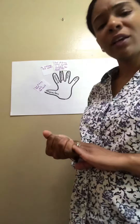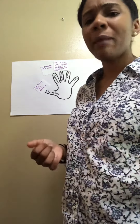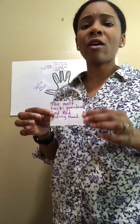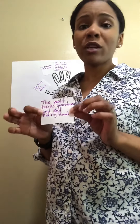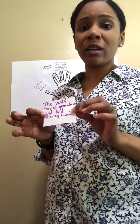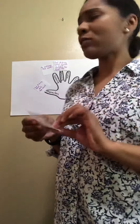Now the middle of the story. Let's think about what happened in the middle. I hope you're thinking about how the wolf tricked Grandma and tricked Red Riding Hood, and he pretended to be Grandma in the middle of that story.